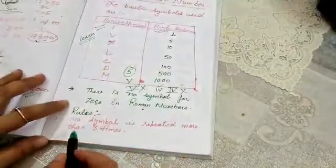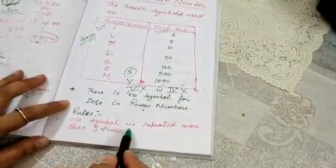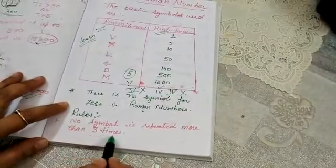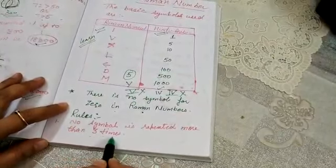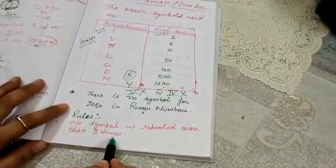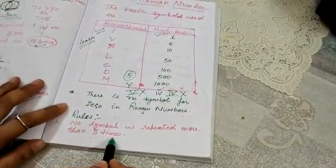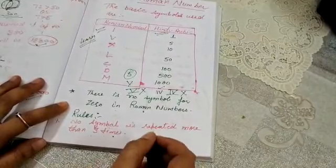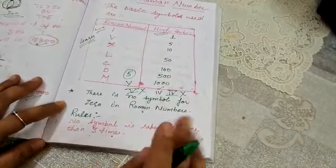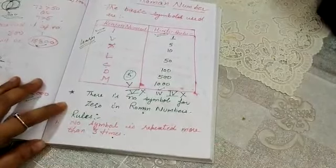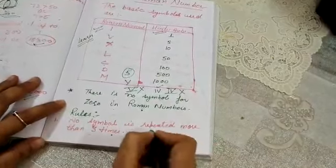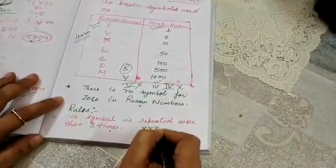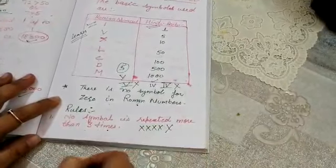The first rule is: no symbol is repeated more than 3 times. For example, if you want to write 40, you will not write X four times — that is wrong.